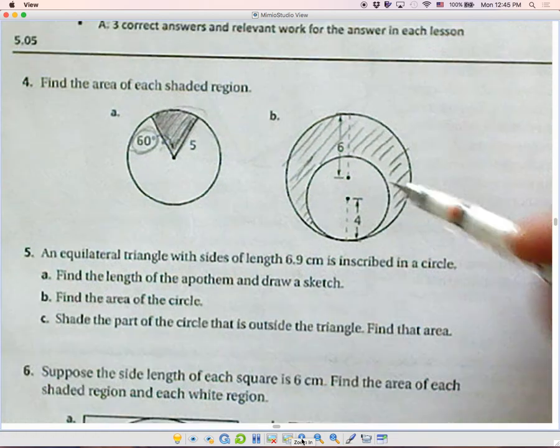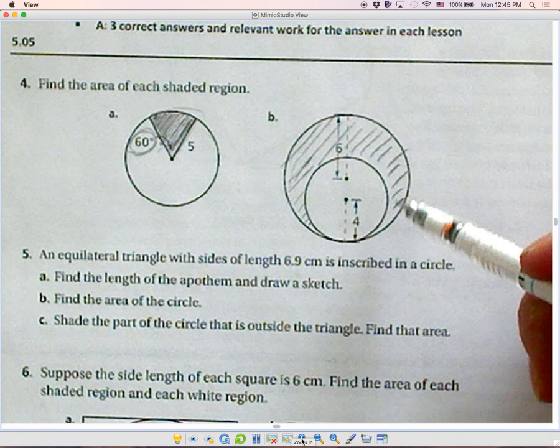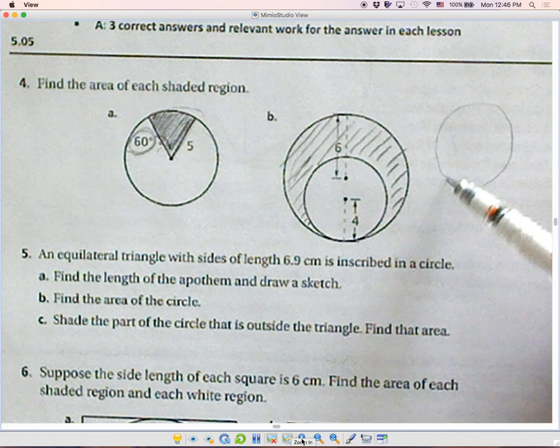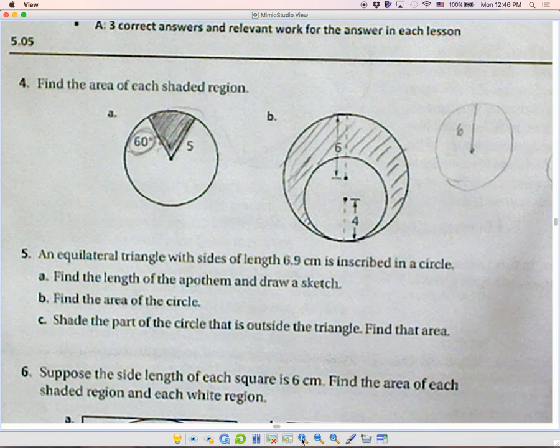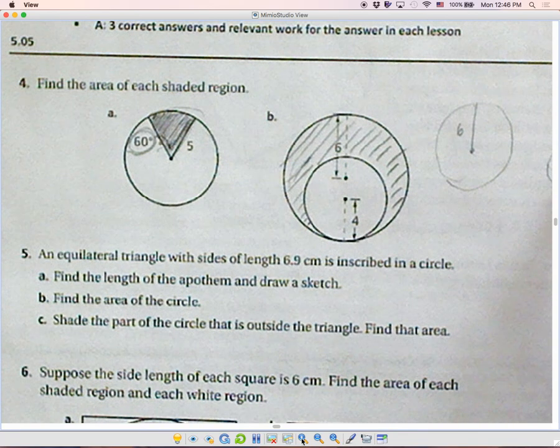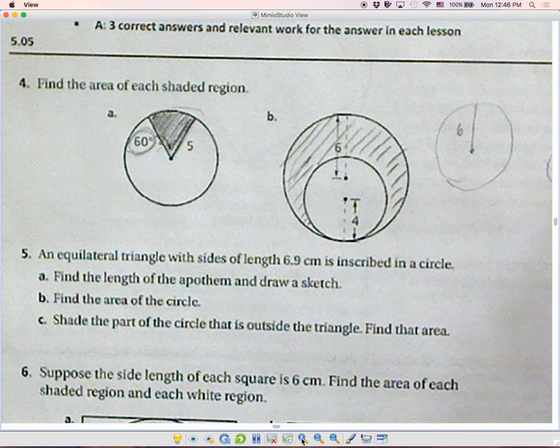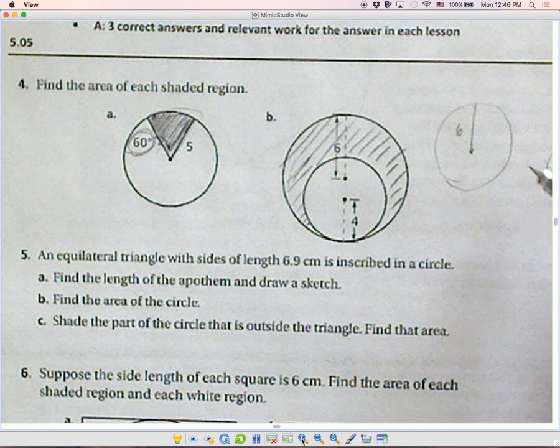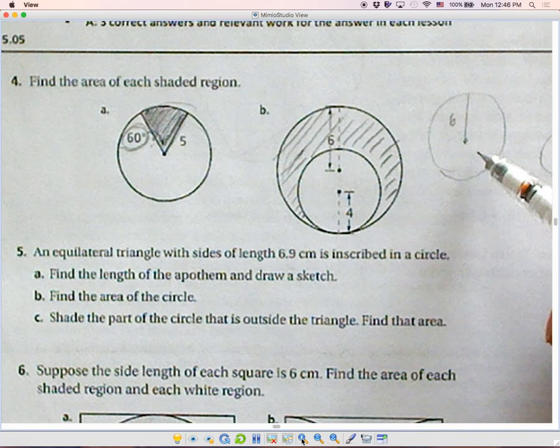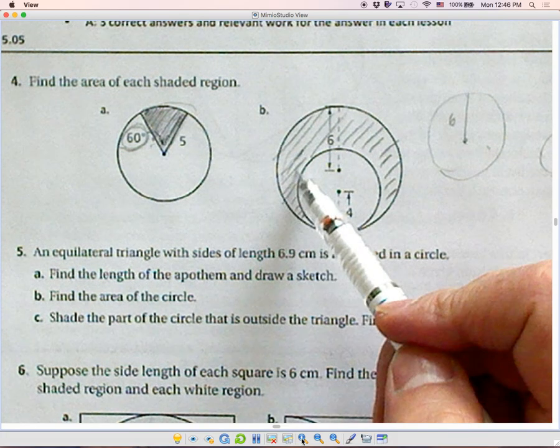For part B, in order to find the shaded area, you should see two circles, which is the big one with the radius 6, and the small one, which is the radius 4. So what can you do to these two circles to find out the shaded area right here?